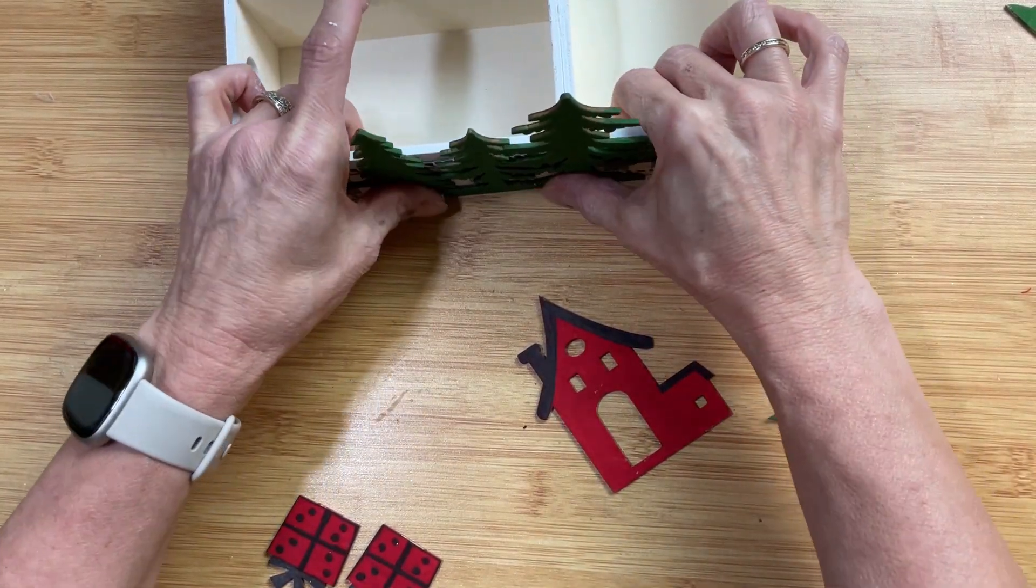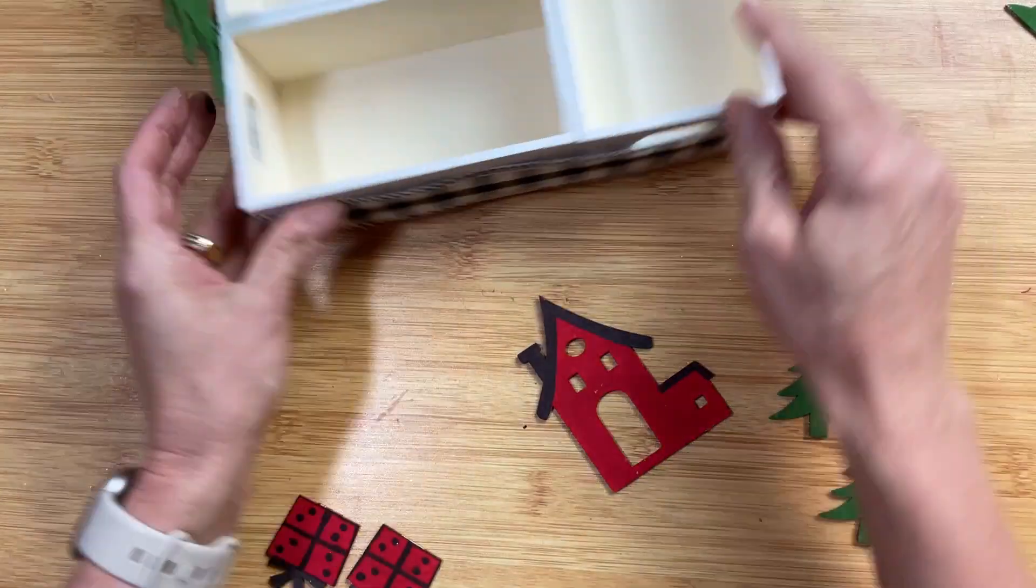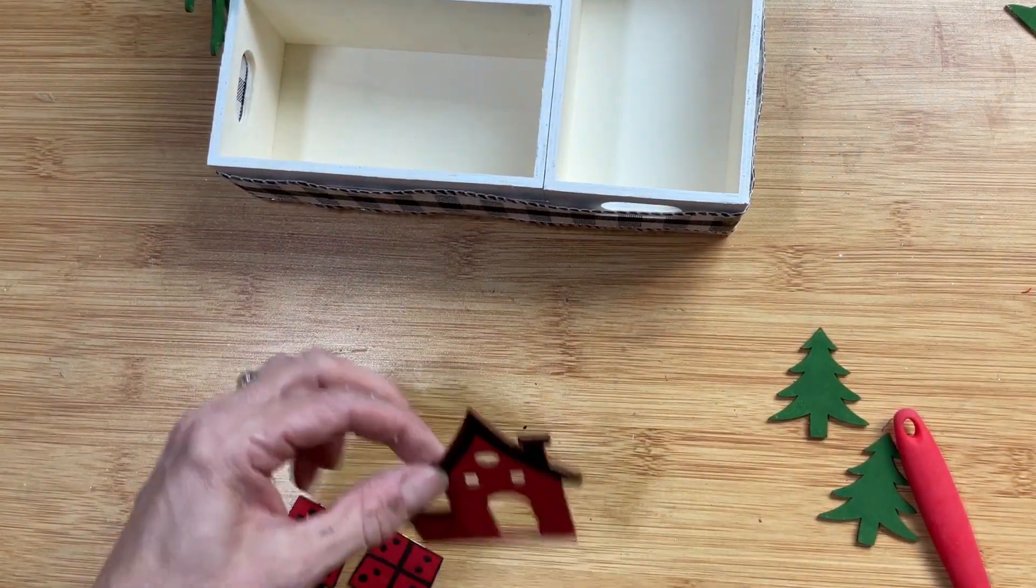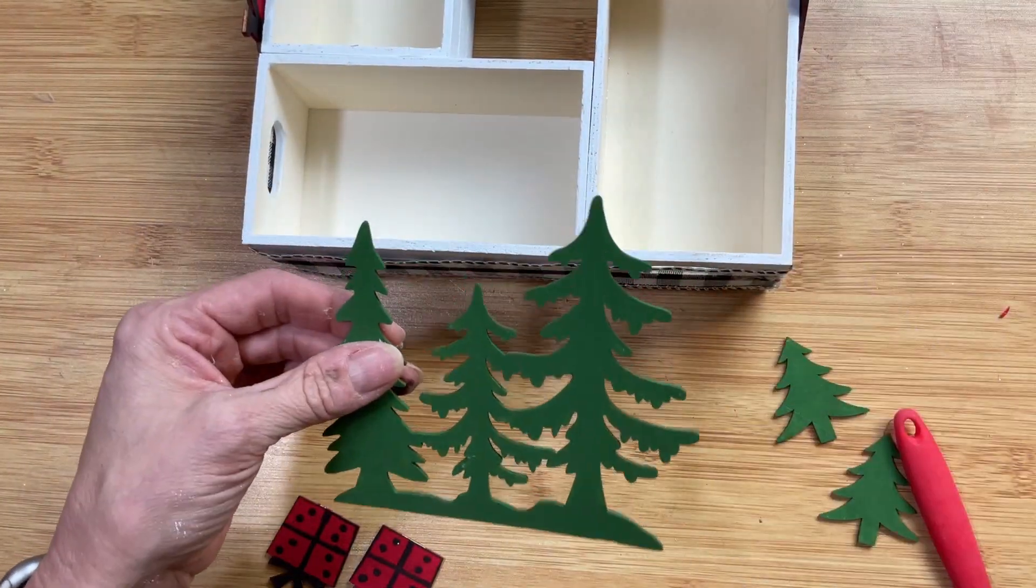Once I have those four things in place I'm going to come back to the two sides that have the houses and I'm going to add a small green tree and a package on either side of the house.